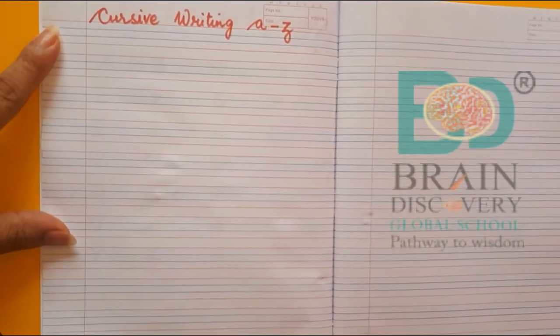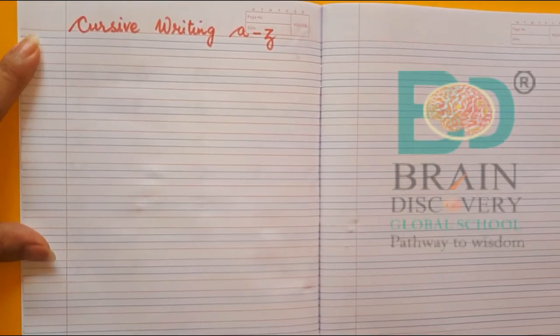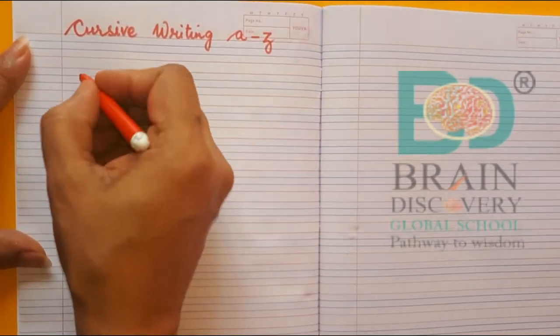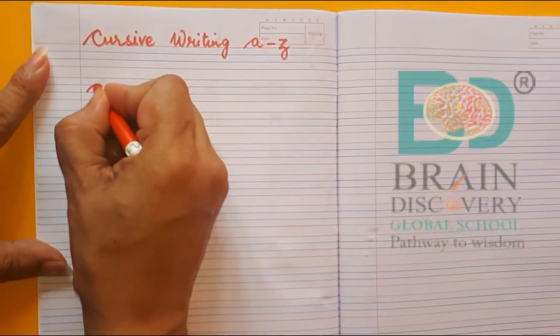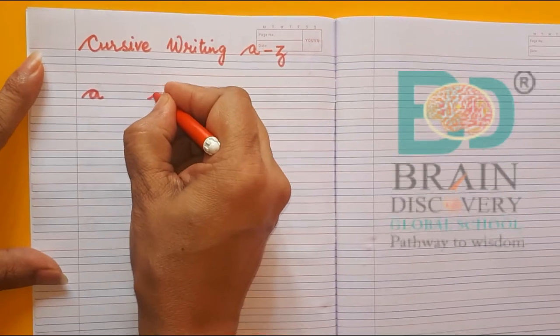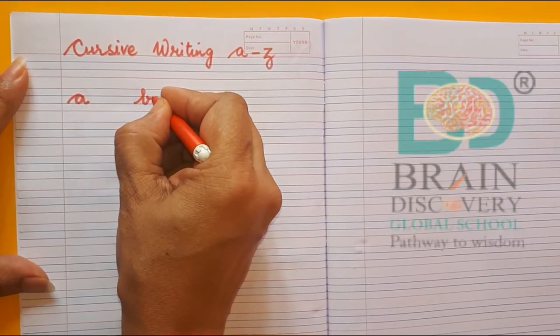Today we are going to learn cursive writing letters of the alphabet a to z. So how do we write a? Like this way and then come down, this is a. How to write b? We go this way, this is b.